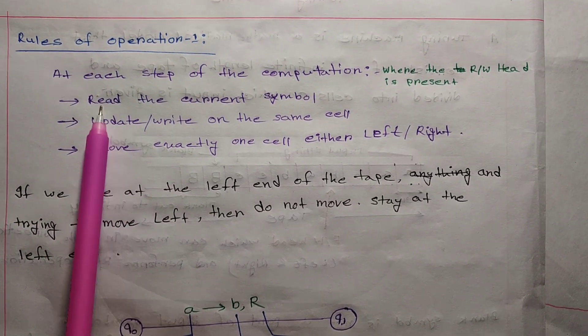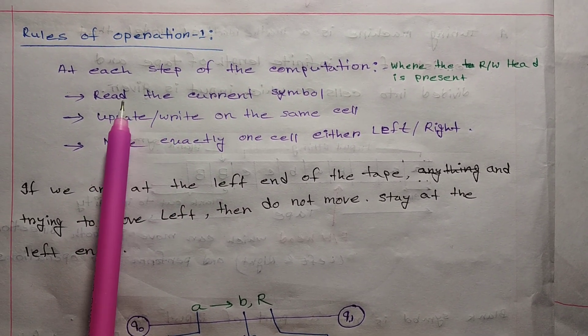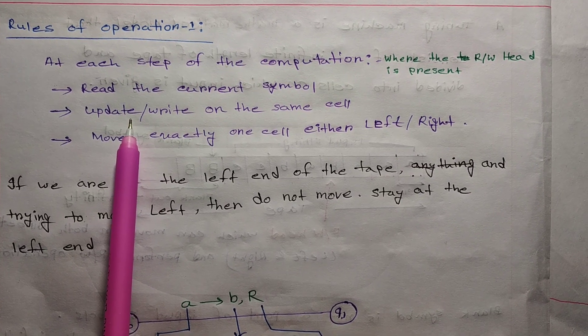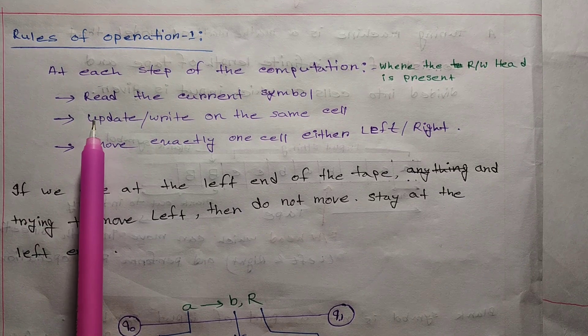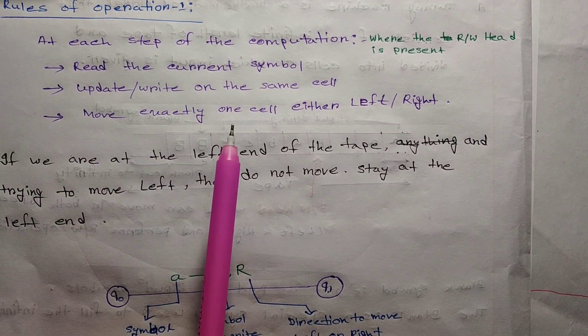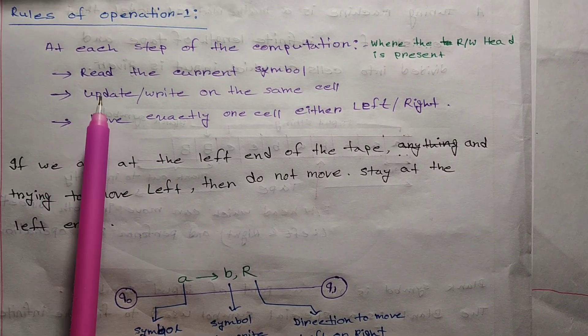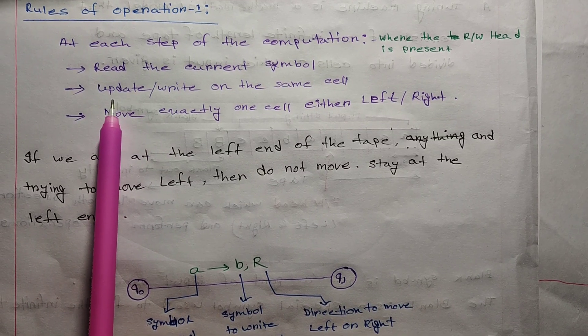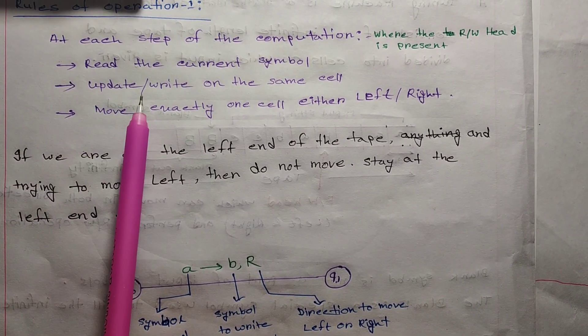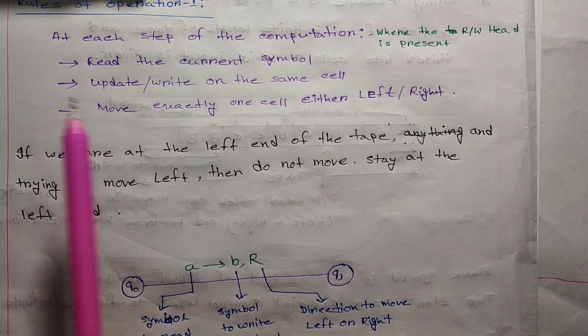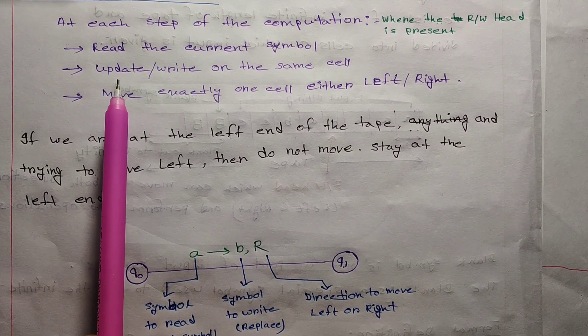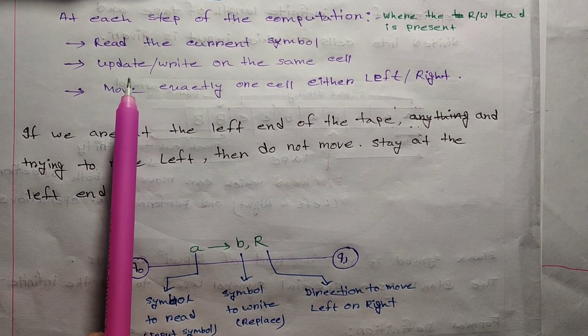The Turing machine performs operations: read the current symbol, then write or update the symbol on the tape, and move the head left or right.